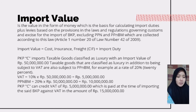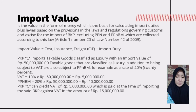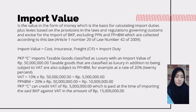For example, PKPC imports taxable goods classified as luxury with an import value of 50 million. Taxable goods classified as luxury, in addition to being subject to VAT, are also subject to PPNBM. At a rate of 20%, VAT is 10% multiplied by 50 million equals 5 million rupiah, and PPNBM is 20% multiplied by 50 million equals 10 million rupiah. PKPC can credit the VAT of 5 million paid at the time of importing against VAT in the amount of 15 million.